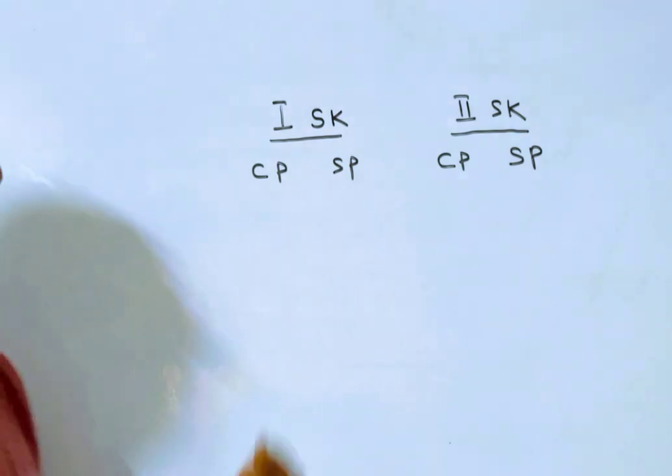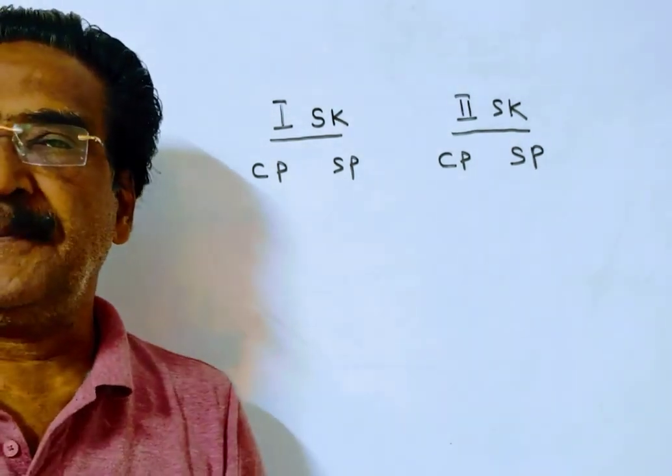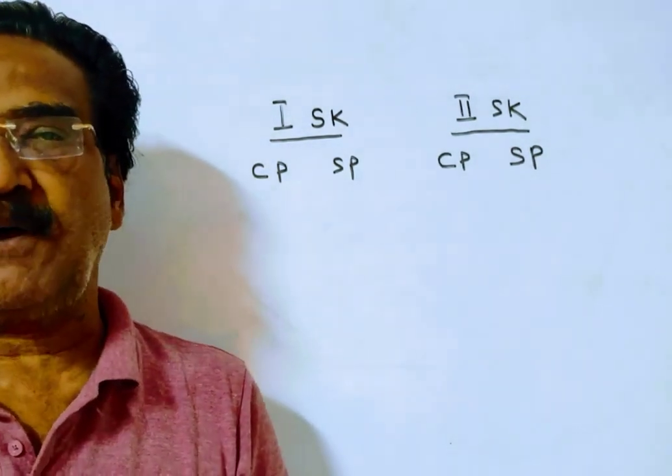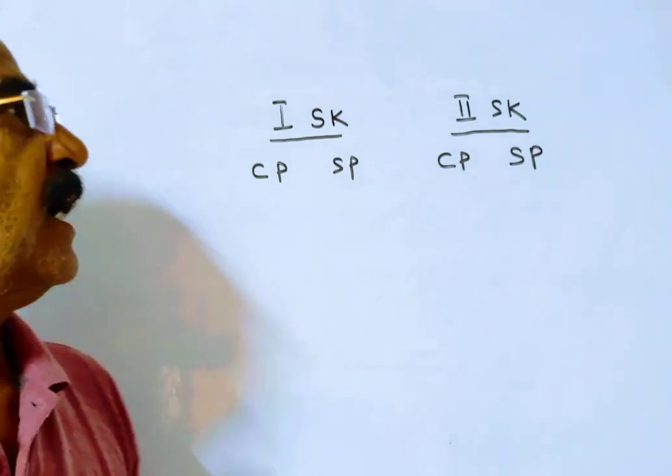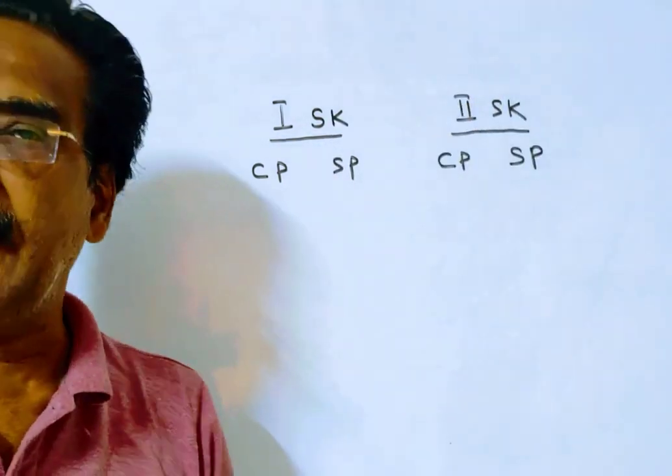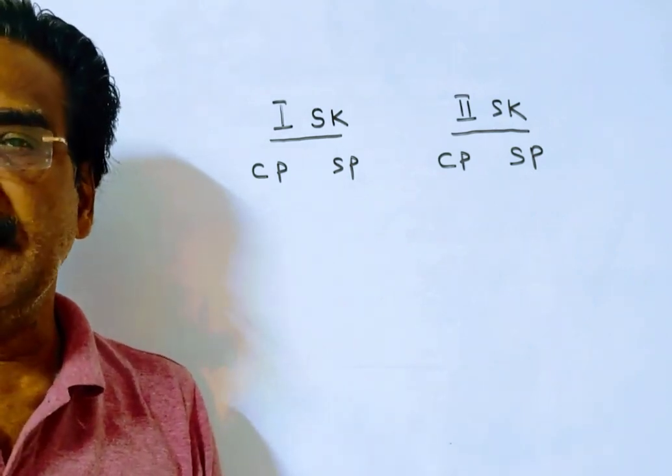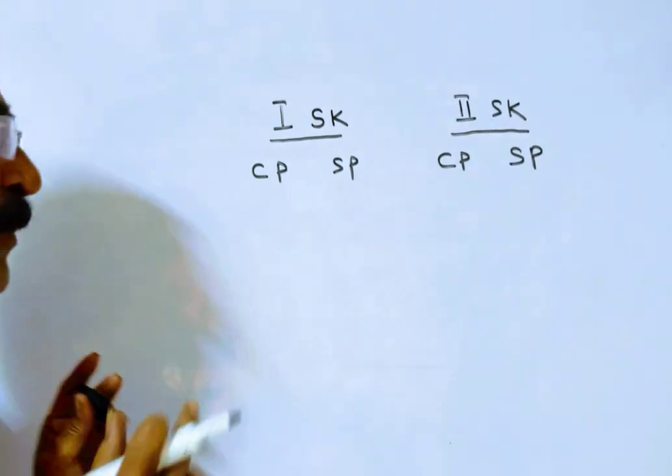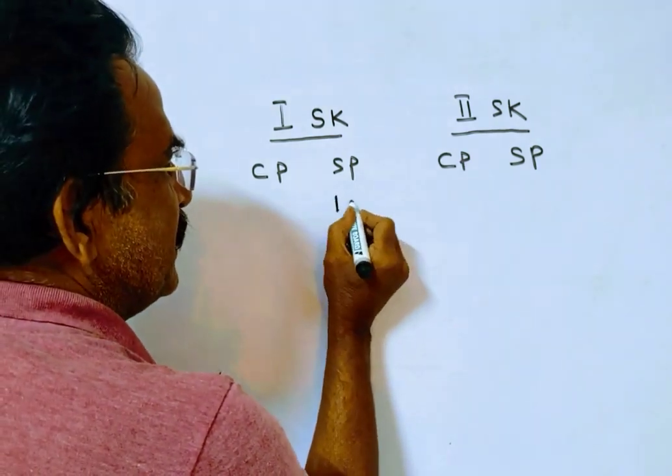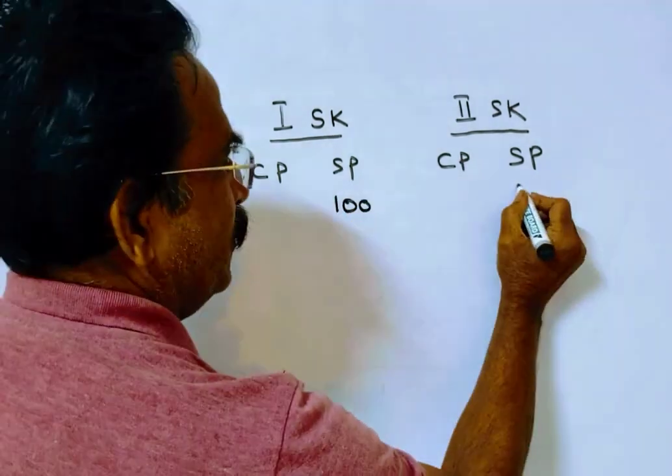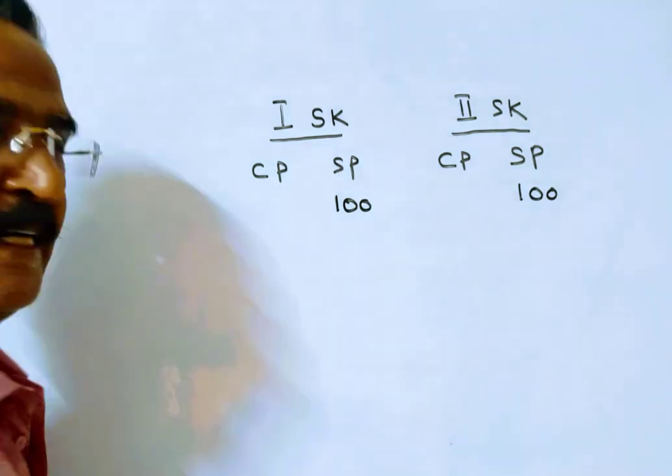Here the first shopkeeper calculates his profit on the selling price, and the second shopkeeper calculates his profit on the cost price. In both cases selling price is the same. Say selling price is 100 in both cases.